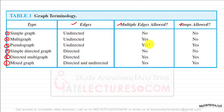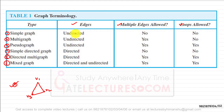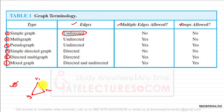Multiple edges means between any two pair of vertices there is more than one edge present. A simple graph has undirected edges — meaning no directions are given — multiple edges are not allowed, and loops are not allowed.